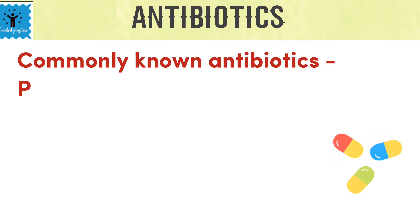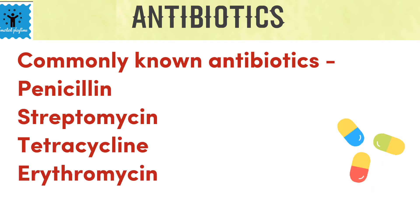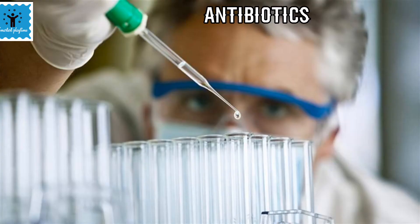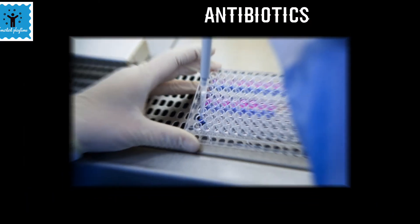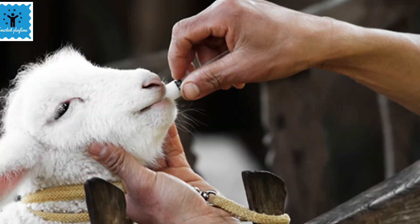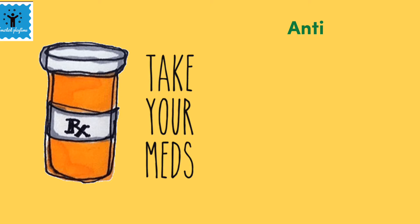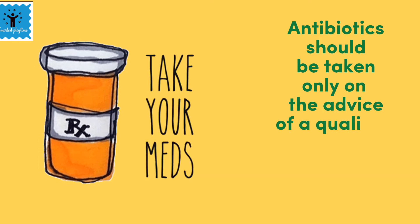Nowadays, a number of antibiotics are being produced from bacteria and fungi. Penicillin, streptomycin, tetracycline, and erythromycin are some of the commonly used antibiotics. They are manufactured by growing specific microorganisms and are used to cure a variety of diseases. Antibiotics are also used to cure diseases in plants and animals. It is important to remember that antibiotics should be taken only when needed and on the advice of a qualified doctor.